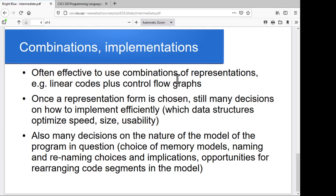We'll look at combinations of the representations at different points over time. In particular, we'll take a look at using a combination of linear codes and control flow graphs. We'll look at decisions that we have to make in terms of how to optimize the size of the data structures that we're creating for this representation, the speed of them in terms of searching and traversing them, how usable they are, how effective they are, how intuitive they are.